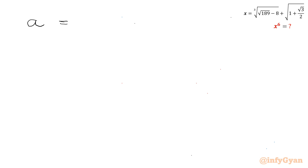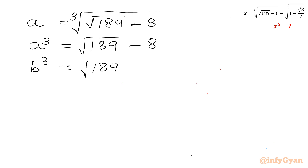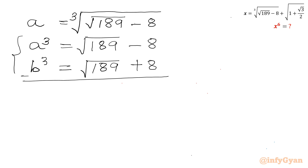Now let us calculate a. A equals cube root of (square root of 189 minus 8). Taking cubing on both sides, a cubed equals square root of 189 minus 8. Let us assume B cubed equals square root of 189 plus 8. Now subtracting the second from the first, the left-hand side is a cubed minus B cubed, and the right-hand side gives minus 8 minus 8 equals minus 16.